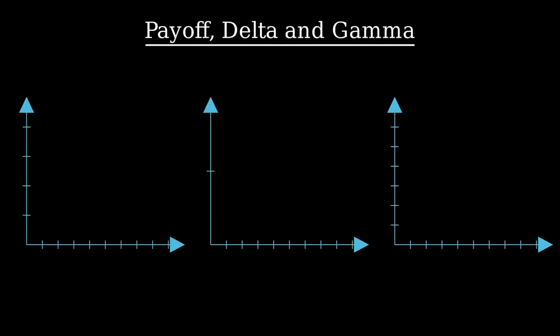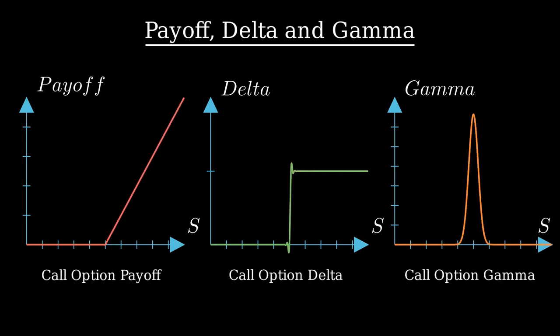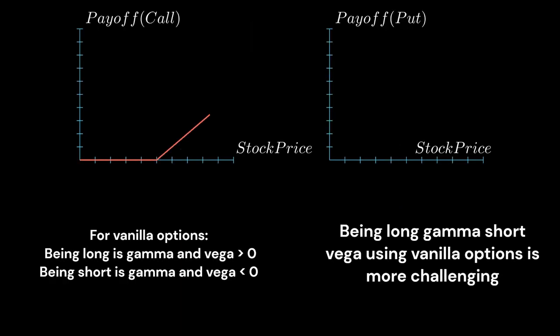Let's take the long gamma short vega example, which is the most complex to construct. As a reminder, a vanilla long call is gamma positive because it's convex, and vega positive because an increase in volatility means you can finish deeper in the money. The same applies to a long put. We see that being long gamma and long vega is easy. We simply buy put or call options. To be gamma negative, you need to short vanilla options, but this position is also short vega. We start to see the problem.